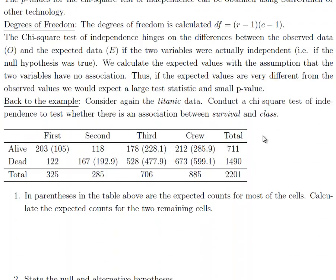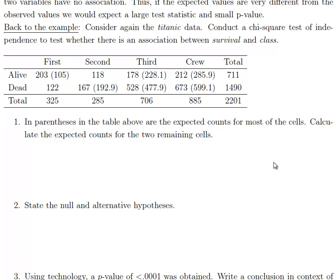Degrees of freedom just counts the number of rows, the number of columns, and you use that if you are using the table. But we're actually going to use technology to look up the p-value so we don't need to be too concerned about that. So let's walk through an example here.